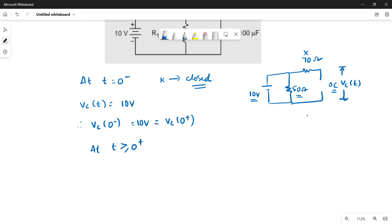Now at t greater than or equal to zero plus, the circuit looks like this. Here is 50 ohms and then 70 ohms, and the capacitor is 100 microfarad.